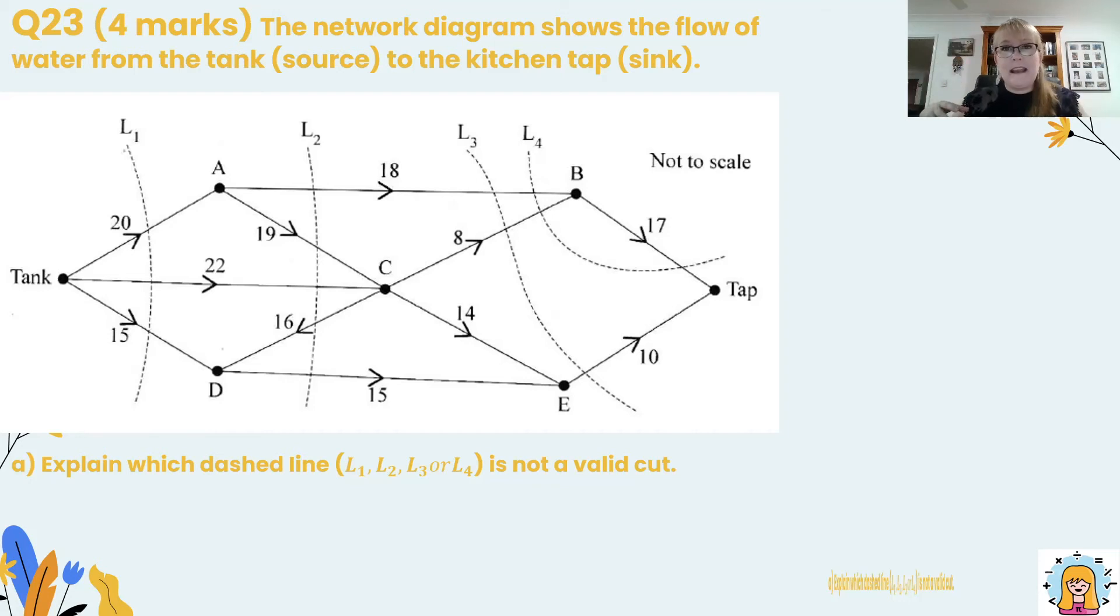Make a logical sense. The stuff that comes out our taps, that pours out, it comes from a tank. So that's our source where it comes from. Okay so we need to explain which dashed line is not a valid cut. So we've got four lines cutting through the network here and one of those is not going to be valid. We need to explain why.